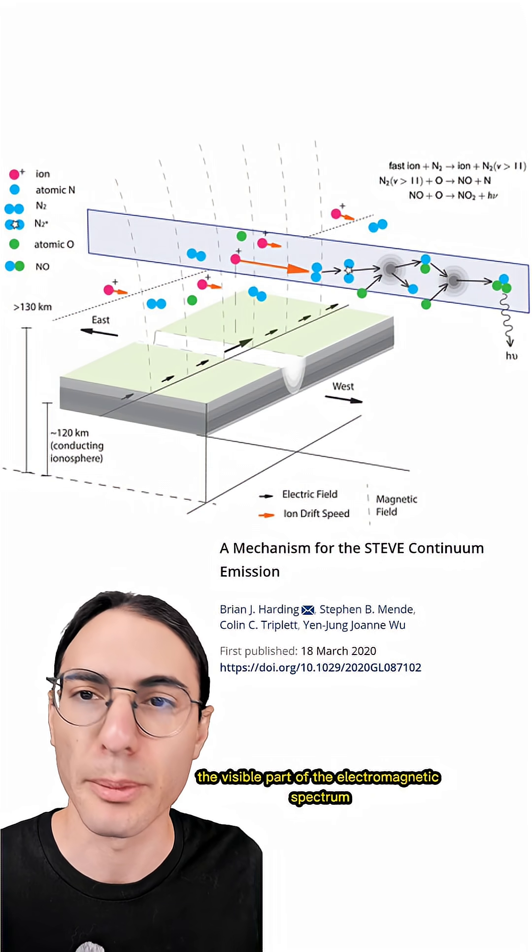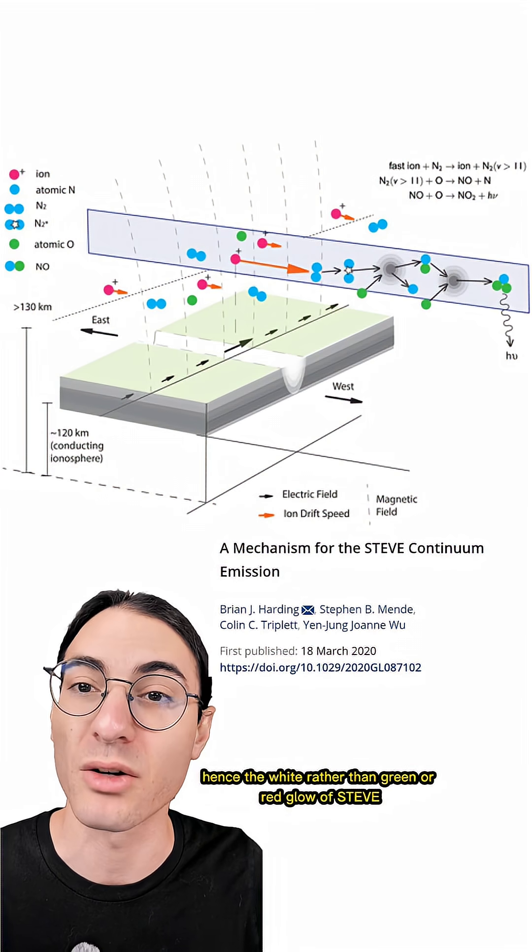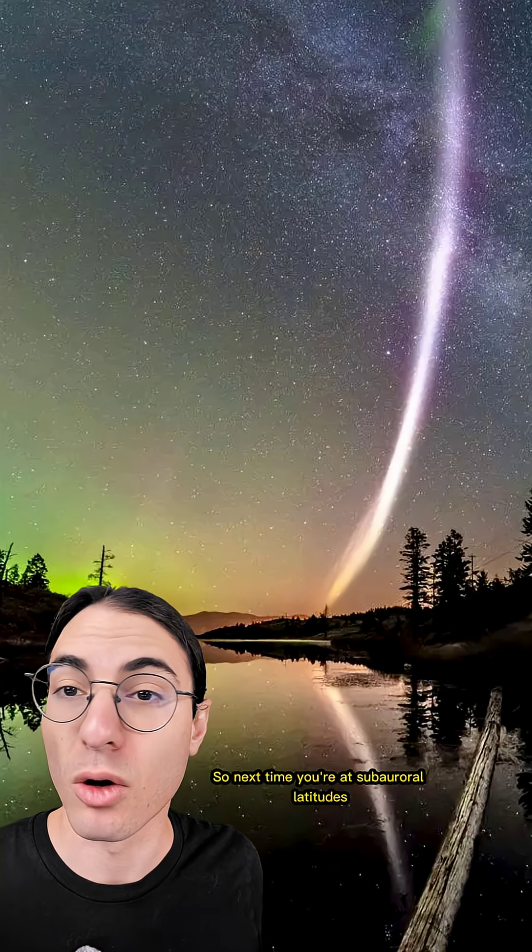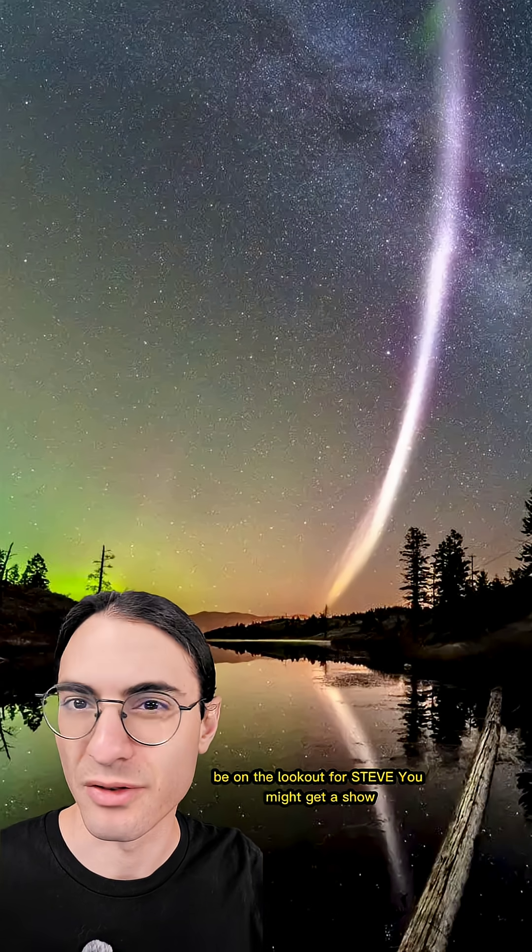The resulting light is spread across the visible part of the electromagnetic spectrum, hence the white, rather than green or red, glow of Steve. So next time you're at subauroral latitudes, be on the lookout for Steve. You might get a show.